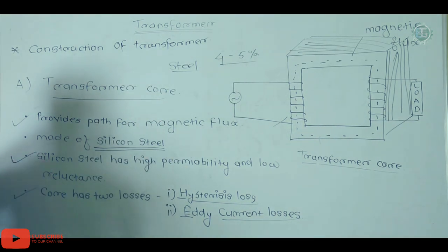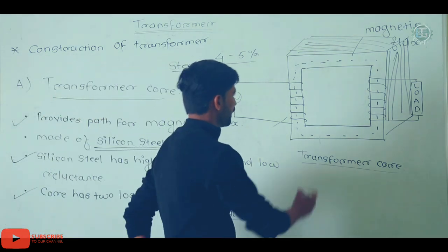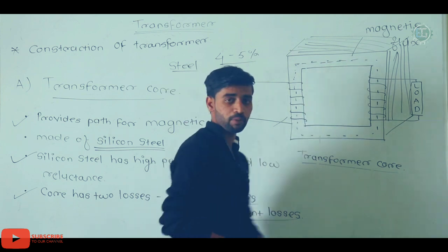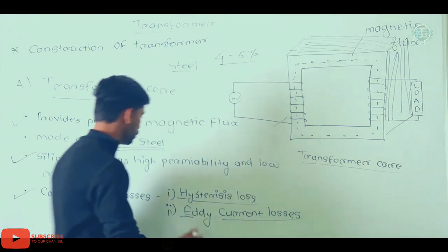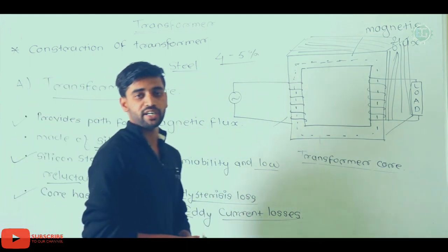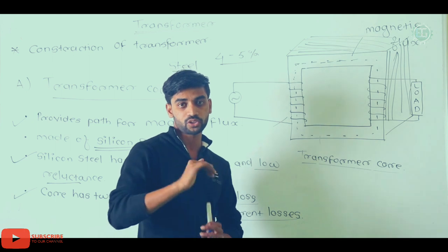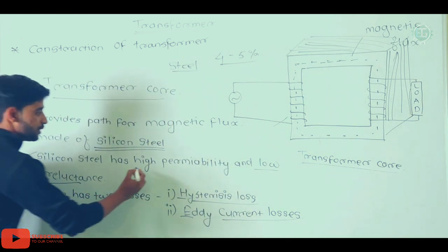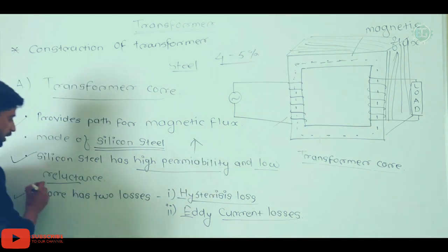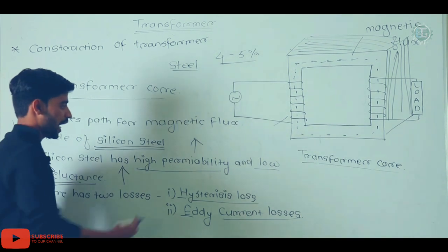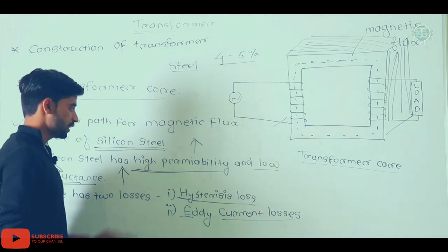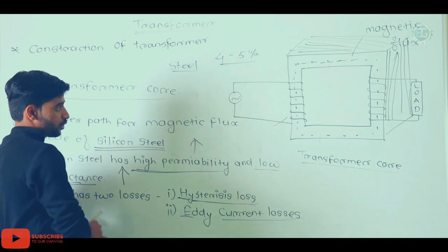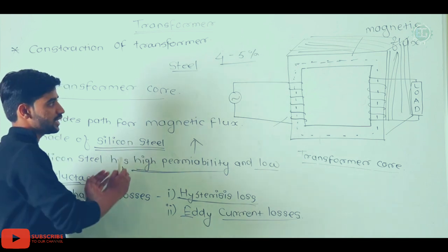Silicon steel has high permeability and low reluctance. High permeability means the core allows magnetic flux to pass through easily. Low reluctance means minimal opposition to magnetic flux. This high permeability and low reluctance property of silicon steel also helps reduce hysteresis loss, making it an ideal material for the transformer core.